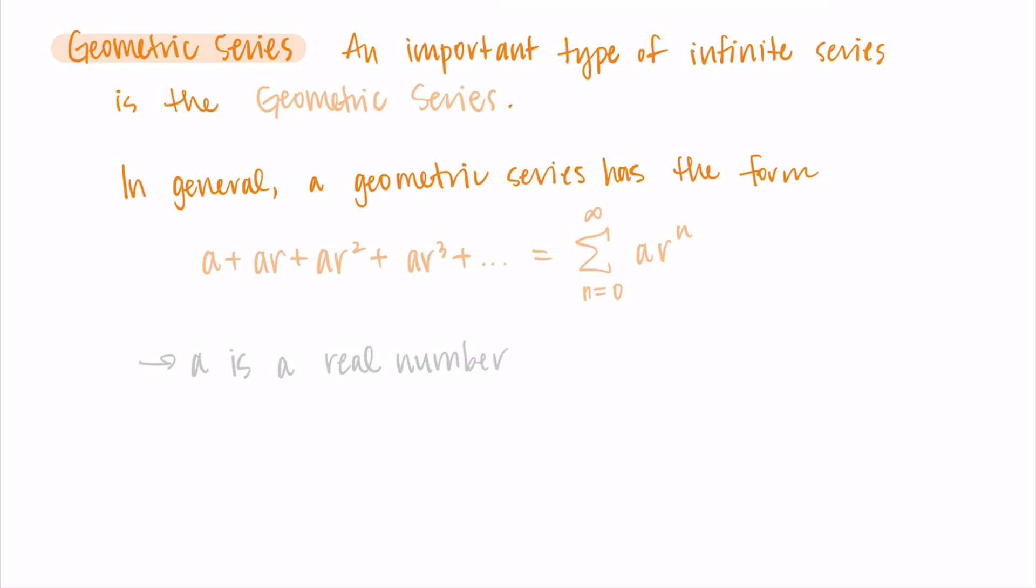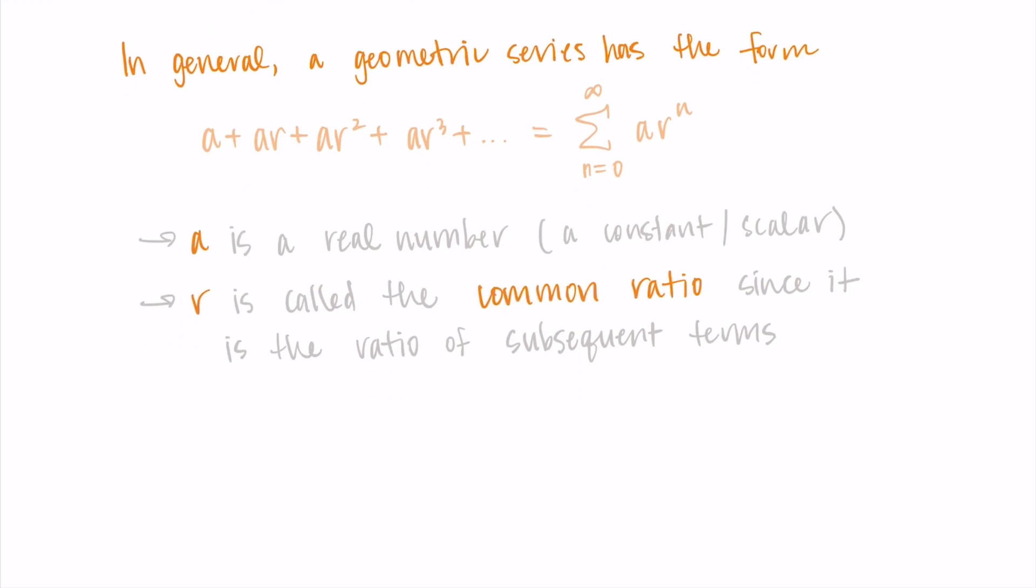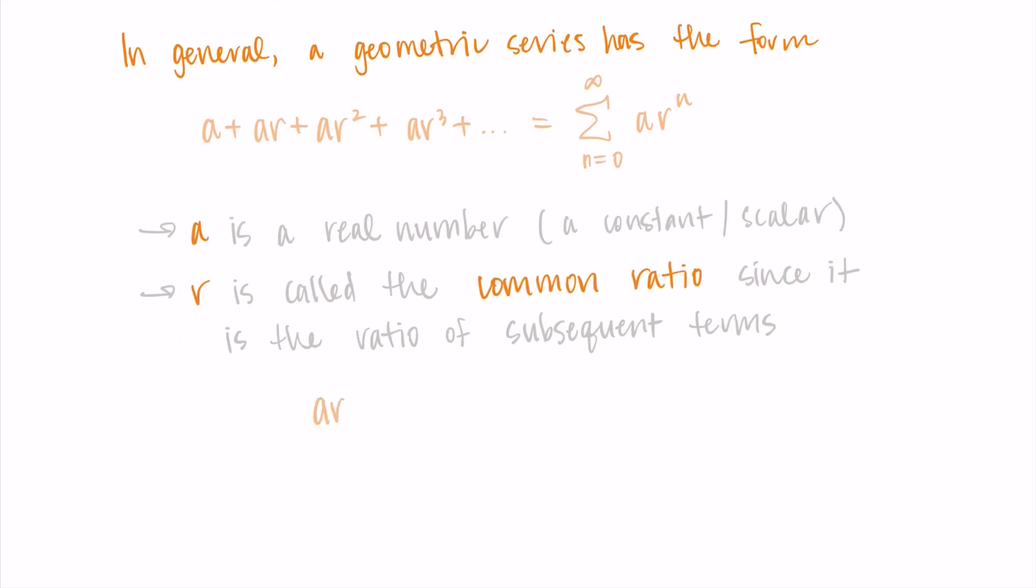So in this formula, a is just a real number. It's a constant or a scalar that's being multiplied by r to the n. Then we call r the common ratio, and this is because it's the ratio of subsequent terms. So if we look at any two terms in this series and take their ratio, we're going to get r.